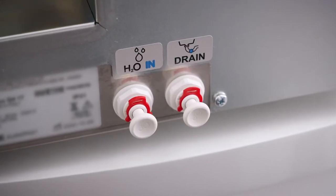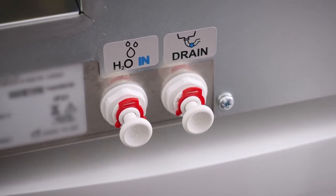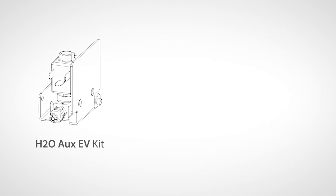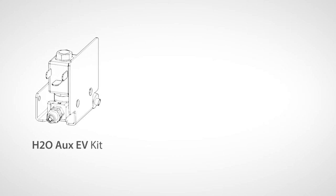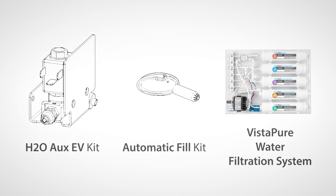The preferred method for filling is to use the automatic filling option, which ensures your sterilizer has a constant supply of demineralized water. This can be done using one of several options available, such as the H2O auxiliary EV kit, the automatic fill kit, and the Vistapure water filtration system.